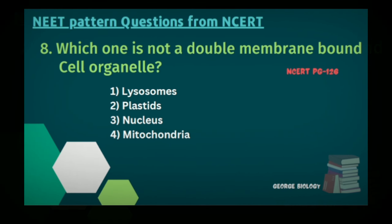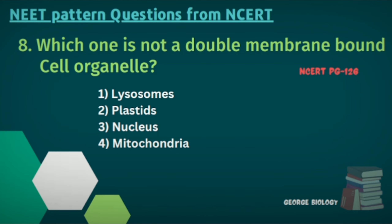Number eight: Which one is not a double membrane bound cell organelle? Options: lysosome, plastids, nucleus, mitochondria. The answer is lysosome — it is a single membrane bound organelle.